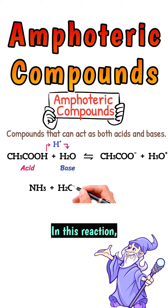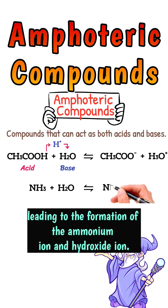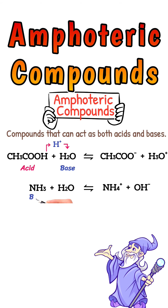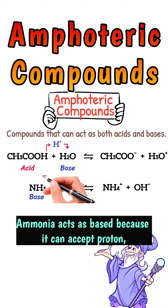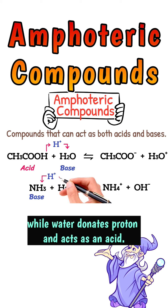In the reaction of ammonia with water, ammonia accepts a proton from water, leading to the formation of the ammonium ion and hydroxide ion. Ammonia acts as a base because it can accept a proton, while water donates a proton and acts as an acid.